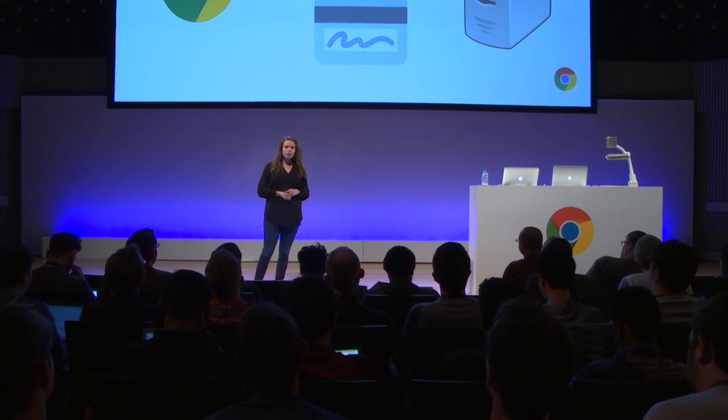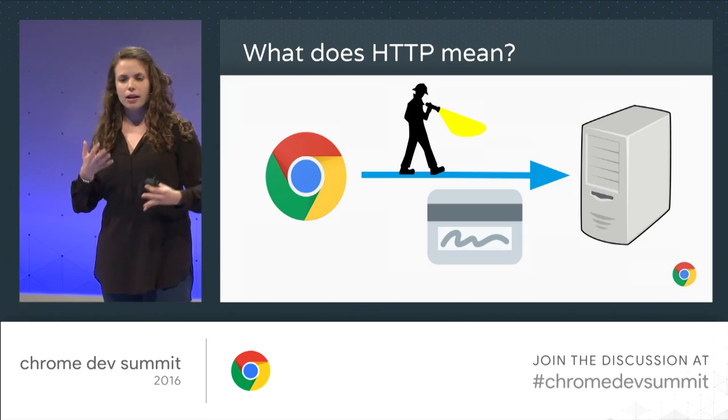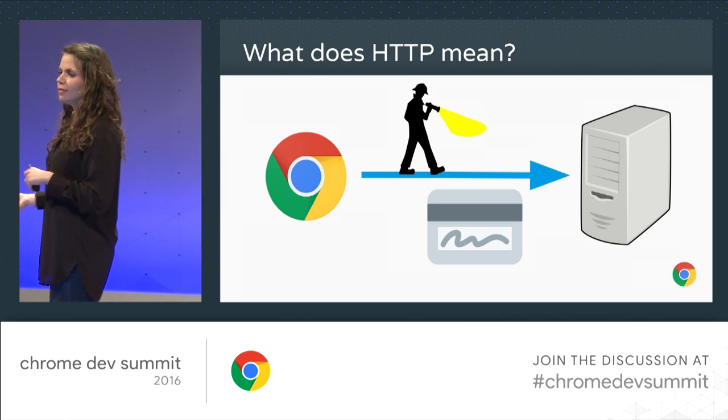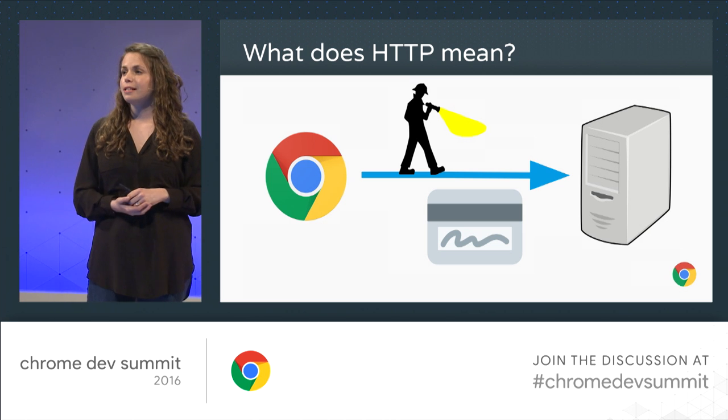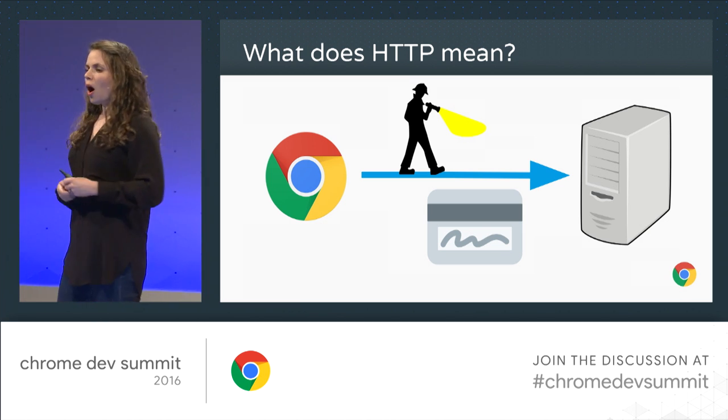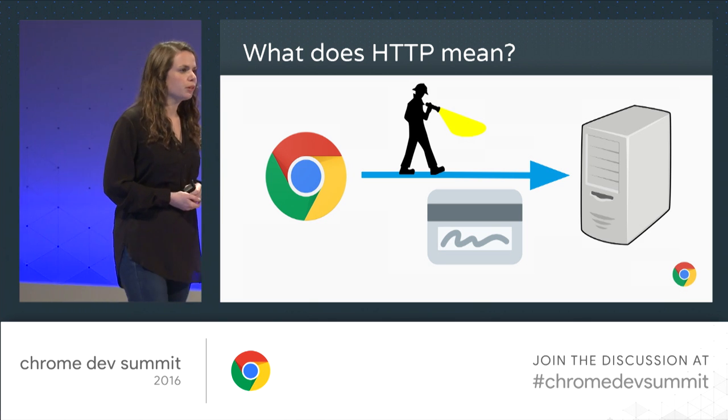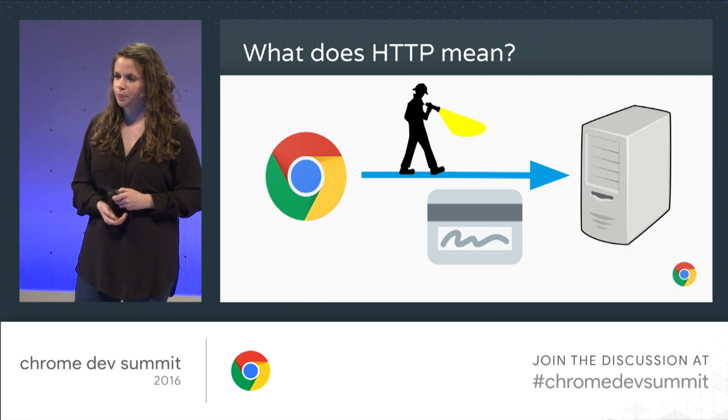As an average web user, you probably wouldn't realize that an attacker sitting between your computer and the web server can read any data that's passing back and forth between the two of you. That could be sensitive data like passwords, credit cards, health content — all the stuff you probably don't want an attacker to read. Or you probably wouldn't realize that even though the omnibox says example.com, that's not necessarily who you're actually talking to. Over insecure HTTP, you could be talking to any attacker who's impersonating example.com.